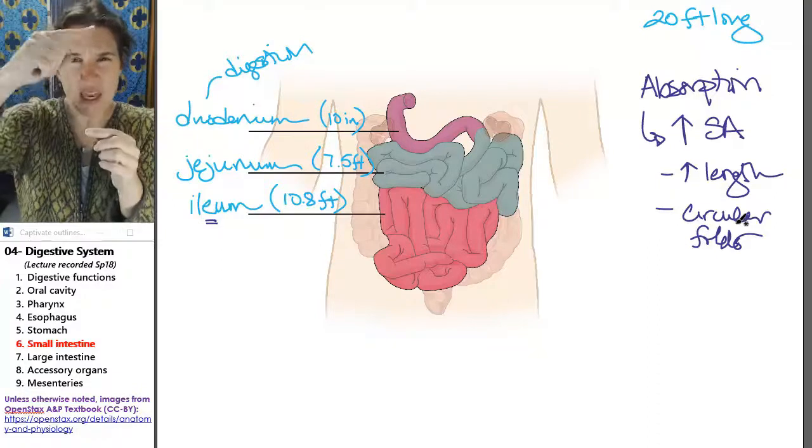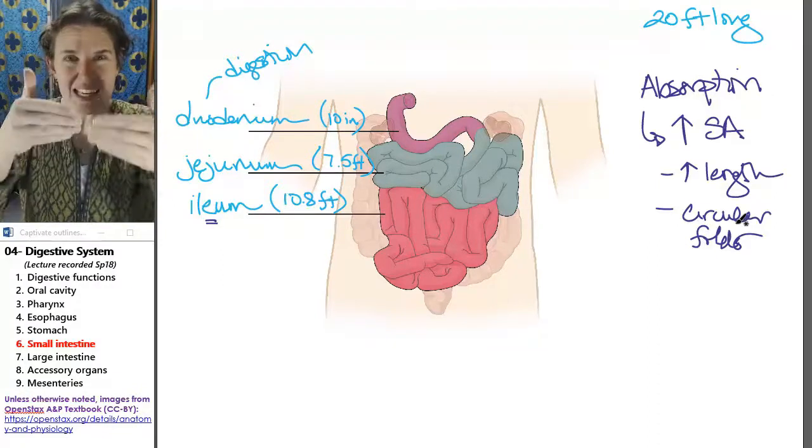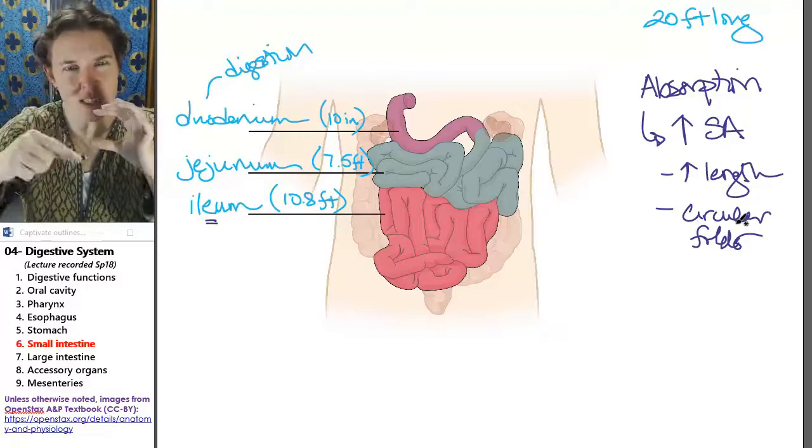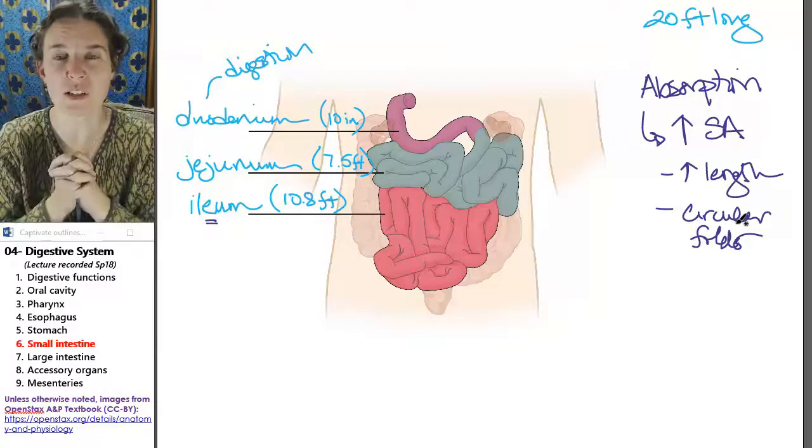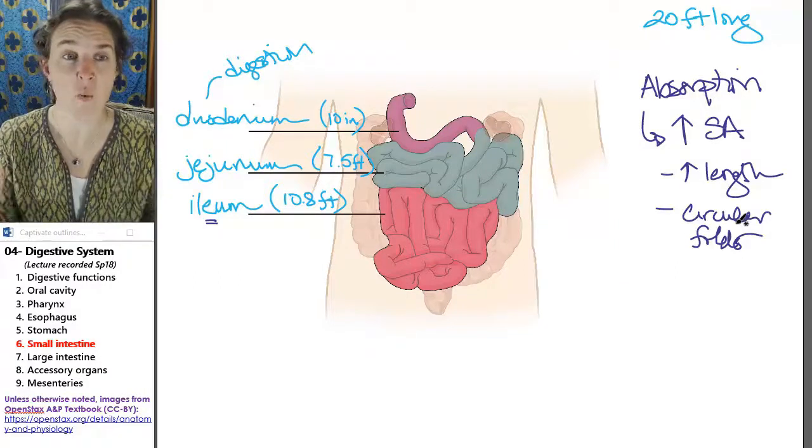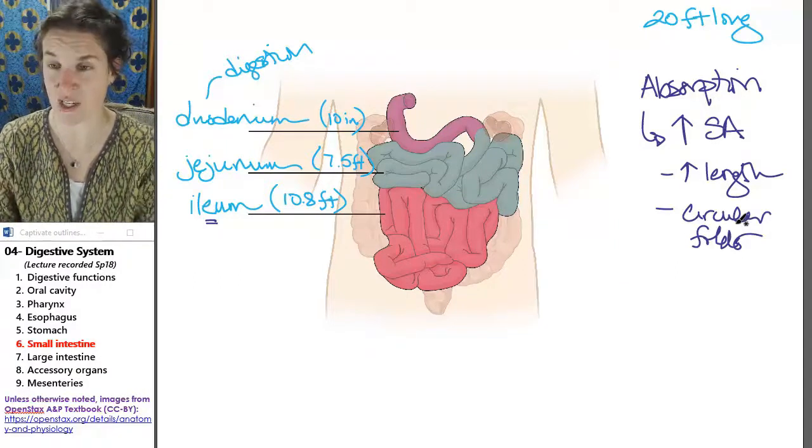And there are these big circular folds in the tube itself, which you can imagine actually functions to increase the surface area. And somewhere I have a picture of that for you. Whether it's today, I actually can't remember.